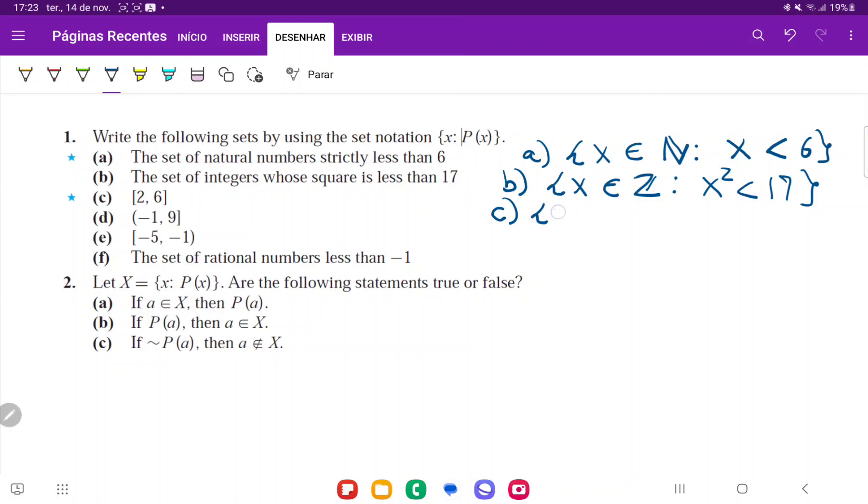So we're going to say x belonging to the real numbers, that's where we get our x from, such that x is between 2 included and 6 included.